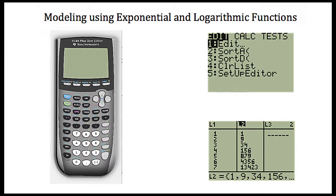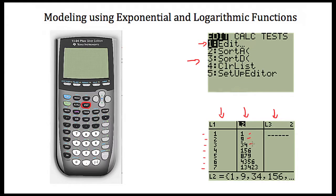If we're going to use a Texas Instrument Calculator, our first step is to hit the Stat button, which will give you a window. In the second column, select the edit function and it will give you several empty lists. Whatever you want to be your x variable, put that data in the first column — so day one, two, three, four, five, six, and seven. In the second column, place whatever you want on your y-axis — so one zombie, nine zombies, 34 zombies, etc., down to 13,423 zombies.